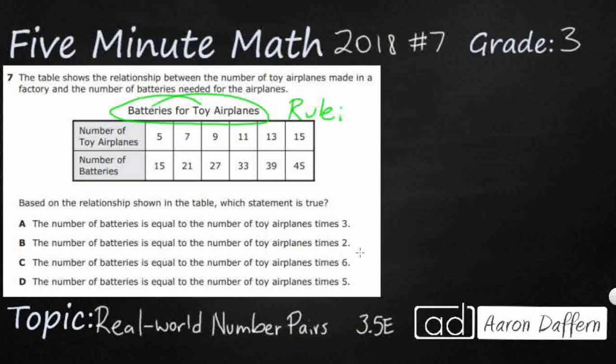This particular table has our two elements: the number of toy airplanes and the number of batteries, going side to side. So if we want to look between the two elements, we're going to need to look up and down, because you always want to look between the two columns. A lot of times your tables are up and down, but this one happens to be side to side, which means we need to look up and down.